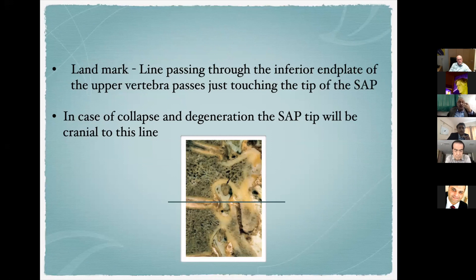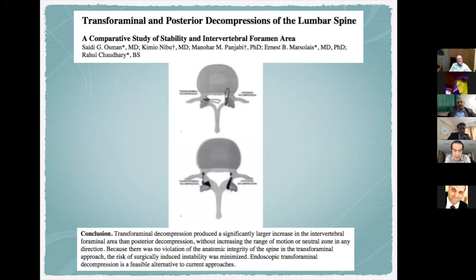A landmark line passes through the inferior end plate just touching the tip of the superior articular process. When disc collapse occurs, this SAP tip will be high-riding — more cranial to this line. A study by Saeed Usman and Punjabi compared decompression through the transforaminal versus posterior area for decompression area and facet joint stability. They found transforaminal decompression produced a significantly larger increase in intervertebral foraminal area without increasing range of motion.